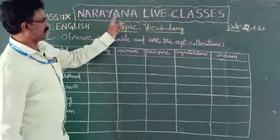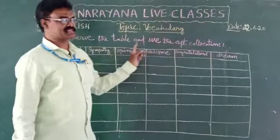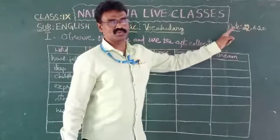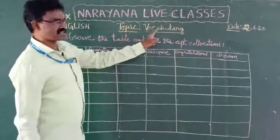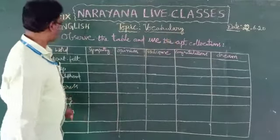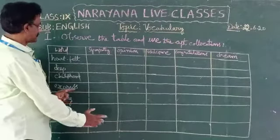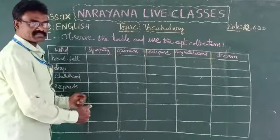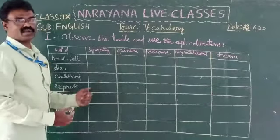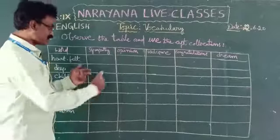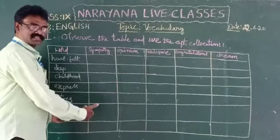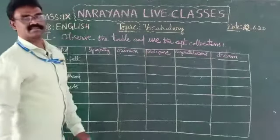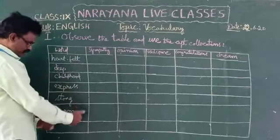Welcome to Narayana live classes assignment key discussion — assignment key of 9th class dated 22nd June 2020. The topic is vocabulary from the second unit. A table is given; on the left side some words are given and we have to combine them. This is called collocations — we have to identify the words which go after these. Observe the table and use the apt, meaning suitable, collocations.